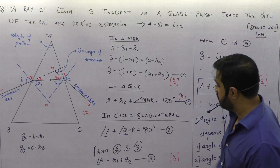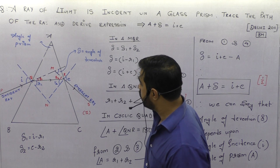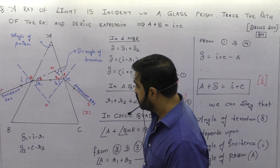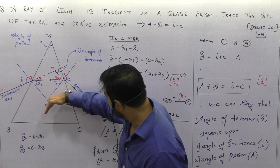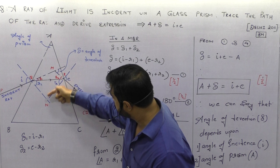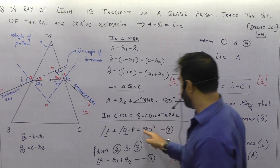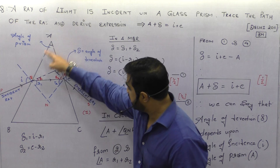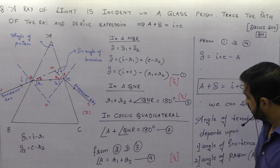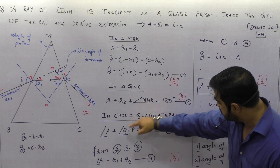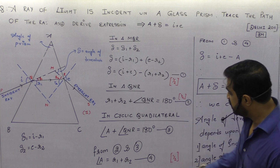The cyclic quadrilateral is AQNR. In a cyclic quadrilateral, opposite angles add up to 180 degrees. Since the normals make 90 degrees each at the two faces, 90 plus 90 equals 180. So angle A plus angle QNR equals 180 degrees. Comparing equation 2 and equation 3, both equal 180 and both contain angle QNR, so A must equal r1 plus r2.